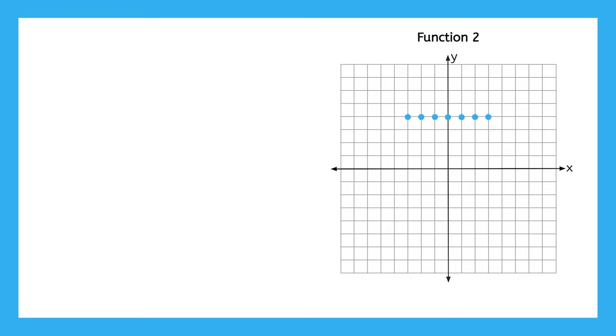Now let's analyze function two. This is a discrete function. We know that because this function is represented by a graph that consists of unconnected individual points. Pause the video here and see if you can take this analysis further by determining the domain and range of this function.